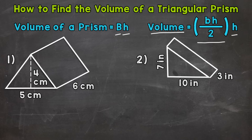Let's jump into number 1 and take a look at the bases of that triangular prism. Now the bases of a prism are congruent and parallel polygons. In the case of triangular prisms, we're going to look at the triangles that are congruent and parallel. For number 1, that triangle up front is congruent and parallel to the triangle in the back. We can't see that full triangle in the back, but it is congruent and parallel.